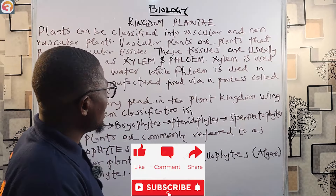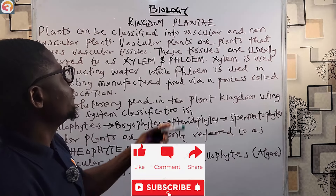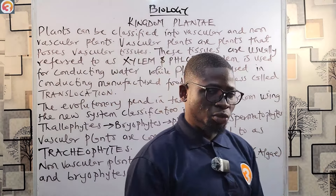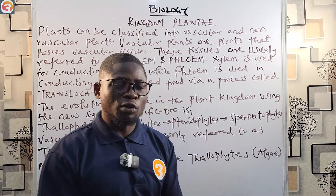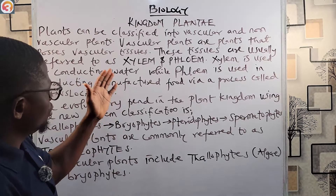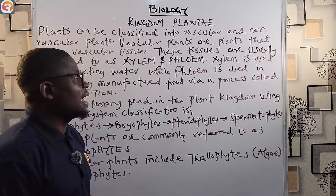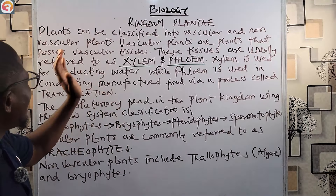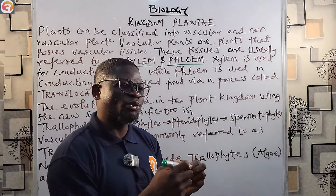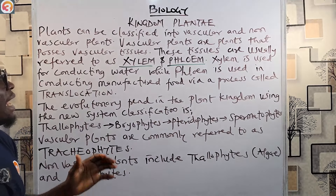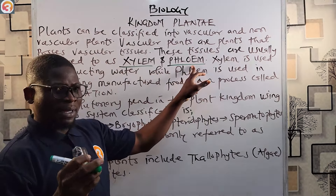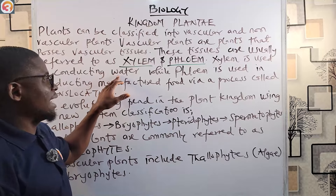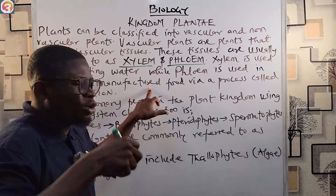Plants are classified into vascular and non-vascular plants. Vascular plants are plants that possess vascular tissues — they have specialized tissues for the transport of minerals and water. These tissues are referred to as xylem and phloem. Vascular plants possess specialized tissues for the transport of mineral and water. The xylem is used for conducting water, while the phloem is used for conducting manufactured food via a process called translocation.